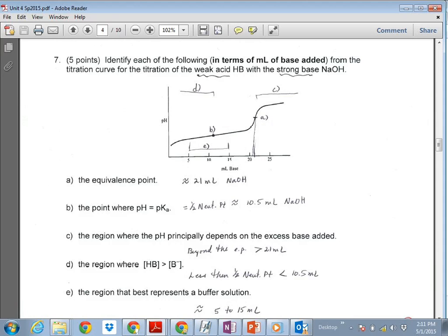Now remember, at that half neutralization point, referred to in B, at that point actually you still have half of your weak acid left, and half of it's been converted to your conjugate base. So actually the molar concentration of your HA and your A minus are the same. That's why that all kind of works that way. So with that in mind, C says where does that pH principally depend upon the excess base added. That would actually be after the equivalence point, so greater than 21 mils.